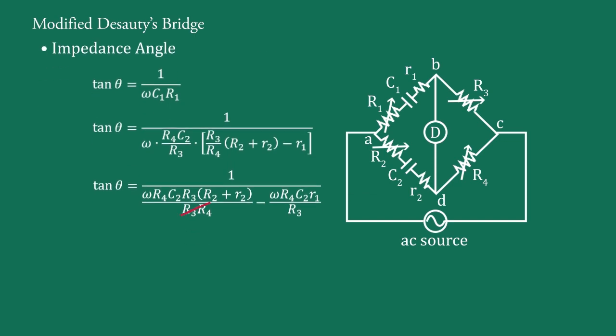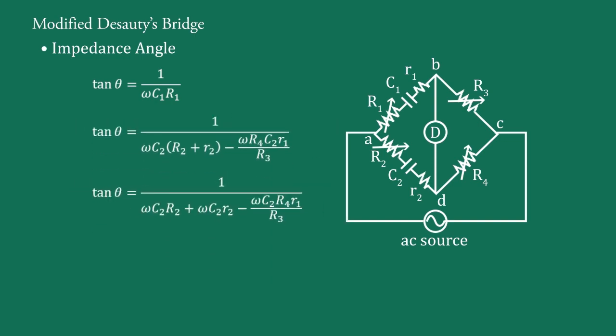After cancellation of R3 and R4 terms, we get tan θ equal to 1/(ωC2R2 + ωC2·r2 − ωC2·R4·r1/R3), which simplifies to 1/(ωC2R2 + ωC2·r2 − ωC2·r4·r1/R3).